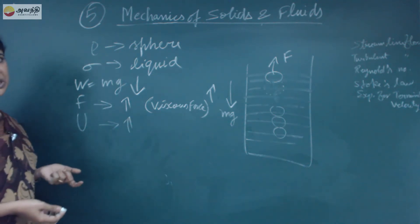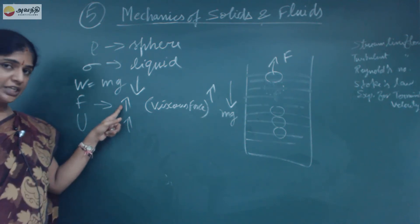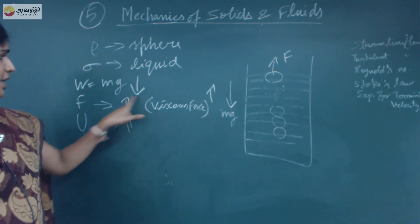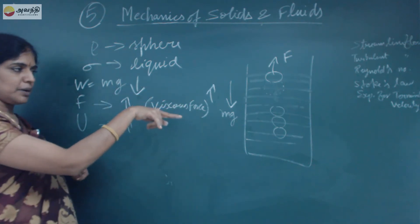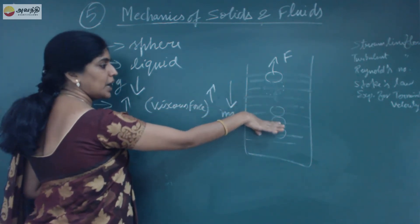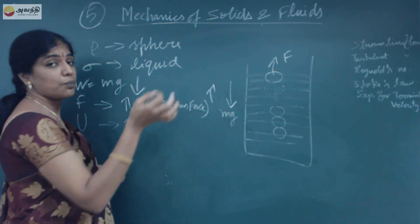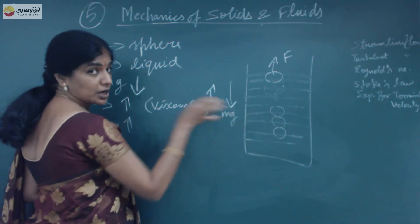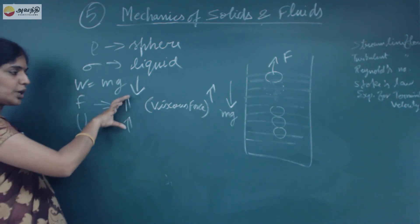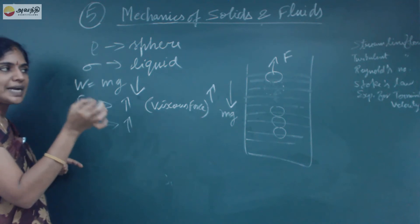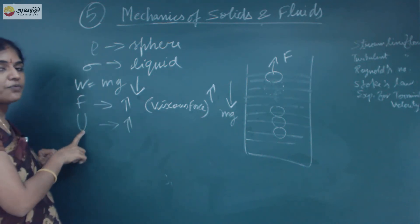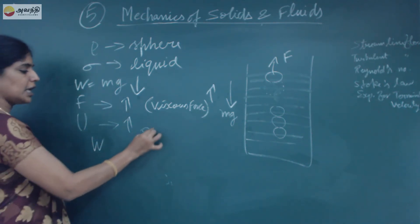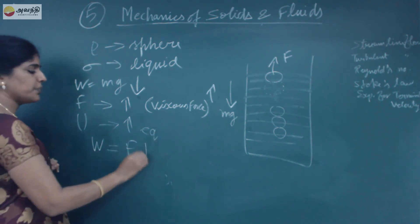Two forces are acting in the upward direction, and the weight of the sphere is acting in the downward direction. When the sphere moves at a constant velocity — terminal velocity — the total upward force equals the downward force. At the equilibrium position, W is equal to F plus U.